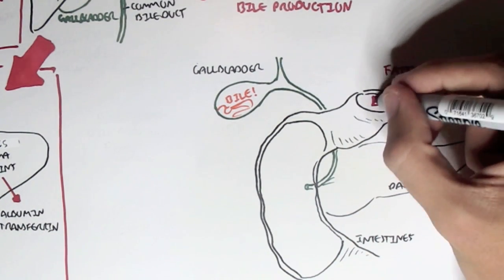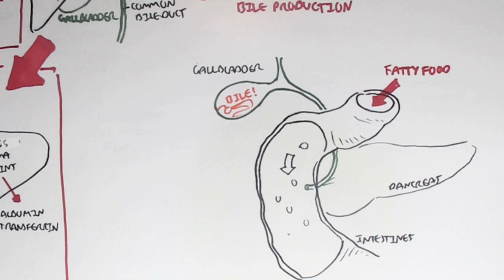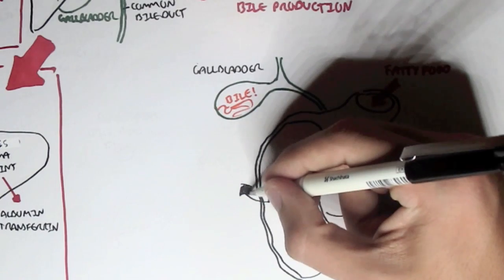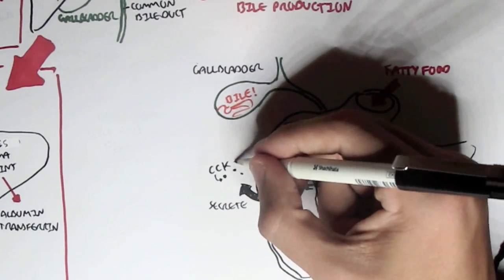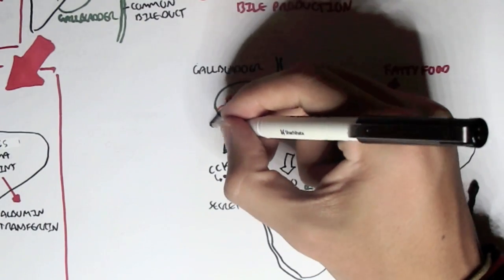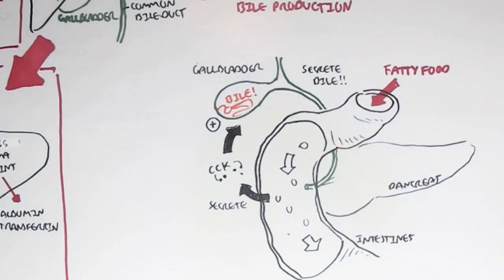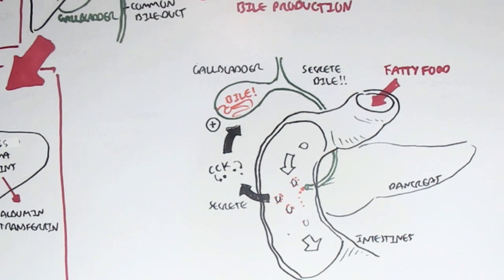When we eat fatty foods, fatty foods will get digested by the stomach, will enter the small intestines, and will stimulate the small intestines to secrete a hormone known as CCK. Because the intestines cannot absorb these fatty substances just like that, it needs the help of bile. So it secretes the hormone CCK, which will then stimulate the gallbladder to contract, to then release the bile into the small intestines, and to help emulsify the fats, cover the fats, so that the fats can be easily digested and absorbed by the small intestines.